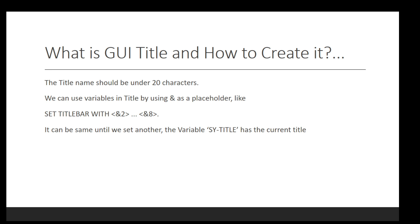SAP has some restrictions: the GUI title name should be under 20 characters. We can also use variables in the title by using ampersand as a placeholder — for example, SET TITLEBAR with ampersand 2 or ampersand 8. The ampersand 2 and ampersand 8 are the names of the placeholders, and the ampersand indicates that the title is dynamic. It will remain the same until we set another. The system variable SY-TITLE holds the current GUI title, and when we set the title bar of any screen, SY-TITLE will be automatically updated.